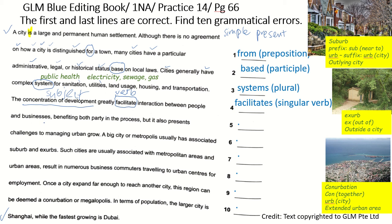Between people and businesses, benefiting both parties in the process. Notice the clue word 'both', which means two. So 'party' should be in plural form. The plural form of 'party' is 'parties' — P-A-R-T, change the Y to I-E-S. Plural form.